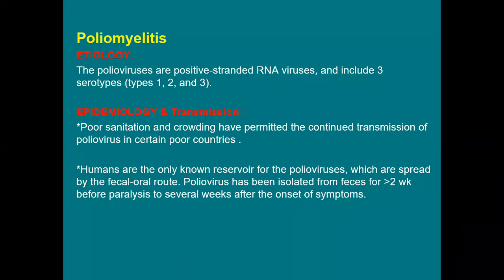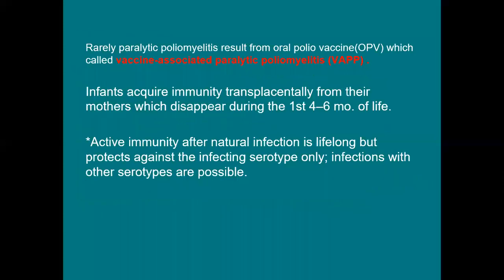Isolation from stool is the method of choice for diagnosis of this infection. Rarely, in some cases, an immunocompromised patient after taking oral polio vaccine — a live attenuated vaccine — can develop paralytic poliomyelitis. This is very rare and is called vaccine-associated paralytic polio.